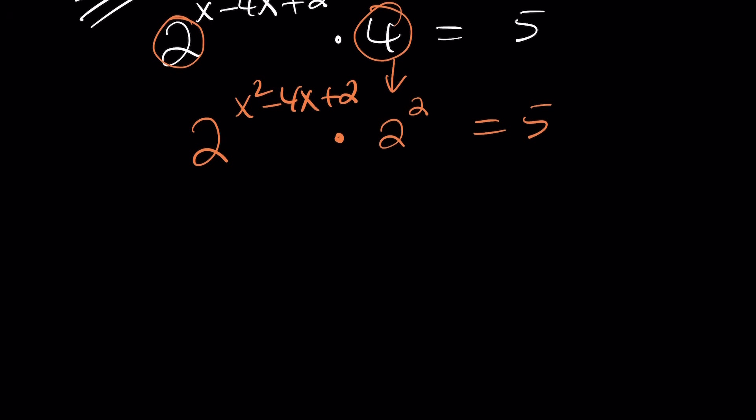Well, they're both two. So we just need to add the exponents. That's how the rule works, right? A to the power x times A to the power y equals A to the power x plus y. Now, this gives us two to the power x squared minus four x plus two plus four equals five.